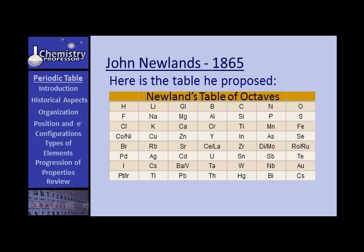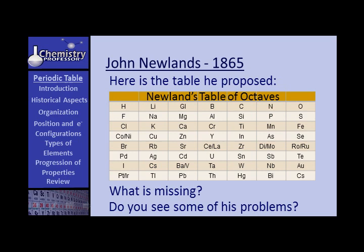Here's the table that he proposed. These were the elements that were known of the day. Do you see what's missing? The noble gases are missing. Do you see some of his problems? He listed them in order of increasing atomic weights, but he grouped them by similar properties — or he tried to group them so that every 8th element or thereabouts was together. He had problems there.